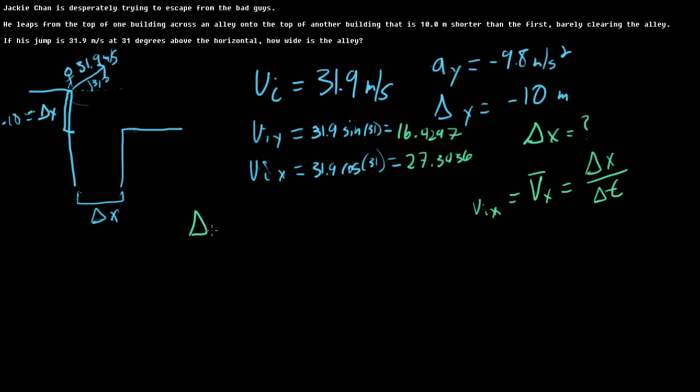In the perfect world, we would just do delta y equals vi y t plus one-half ay t squared. But we can't solve this easily for t, because vi y is not zero. So we don't want to do that. So instead, what we want to do is find vf. So let's find vf.